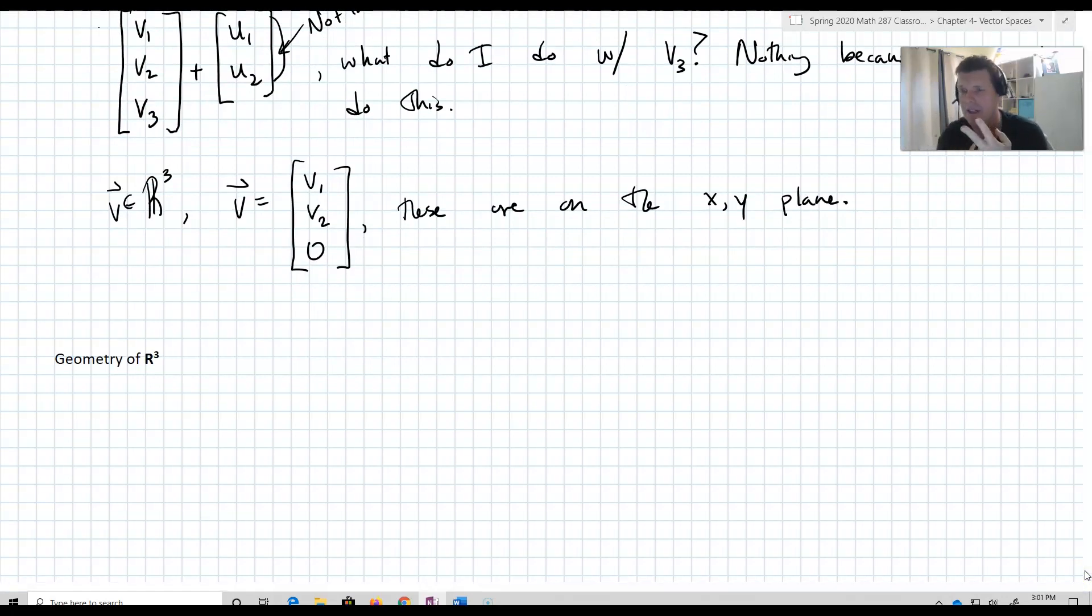We get commutativity of addition. We get the zero vector. We get associativity of addition. We get the distribution properties. Everything's in there in R³. It's just R² is not part of R³. They're not, one's not a subset of the other.